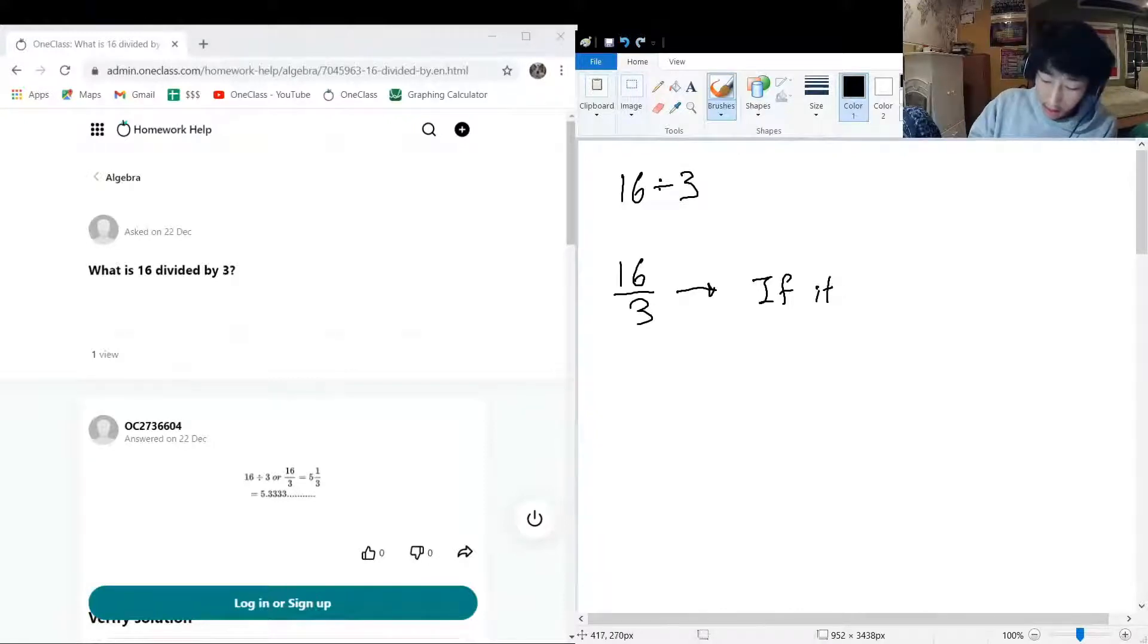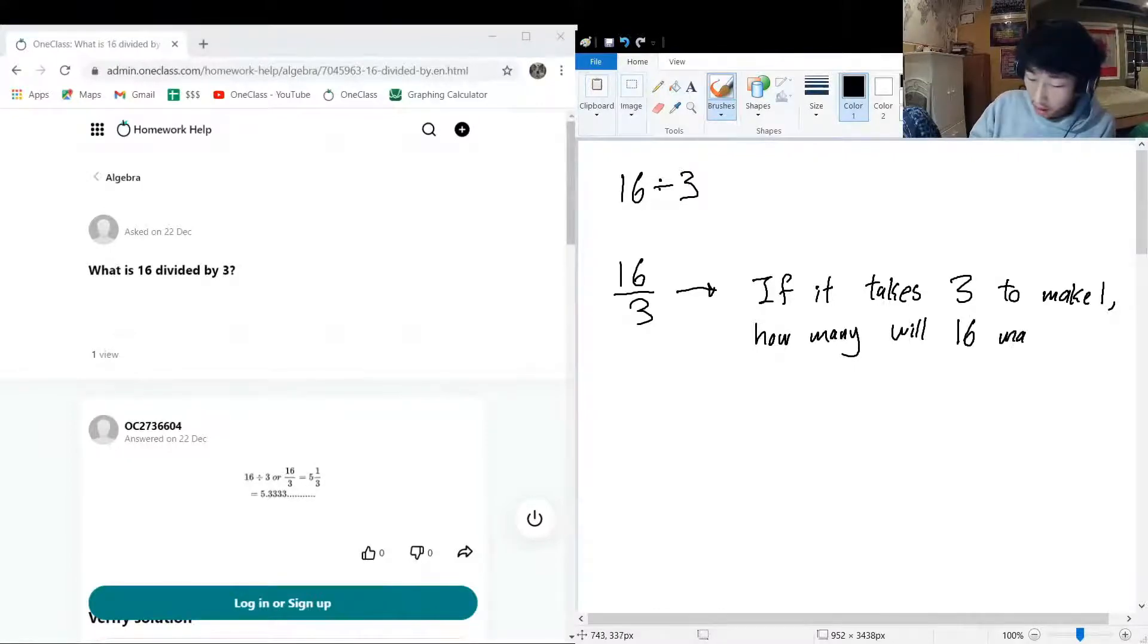If it takes three to make one, how many will 16 make? That's pretty much what this is saying, or if we're trying to equate this into like a physical word type question. Okay, so 16 divided by 3.